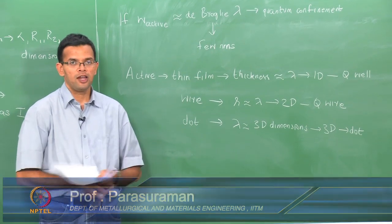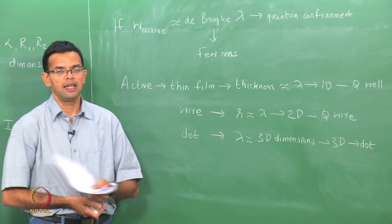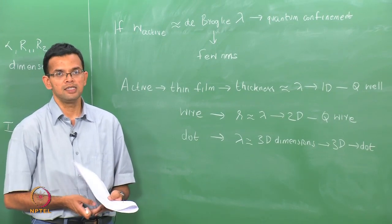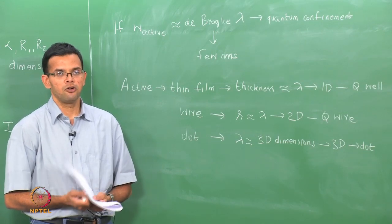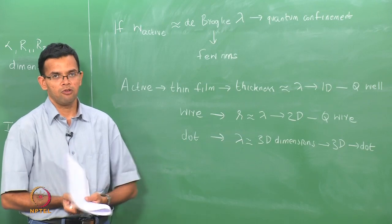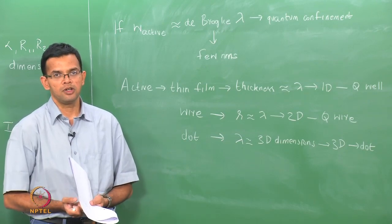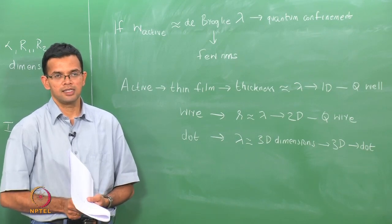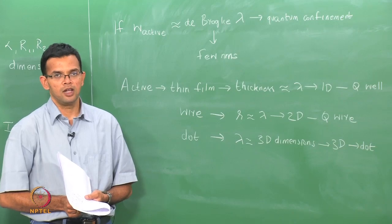We have looked at two optoelectronic devices where an input electric current gives you an output light — both LEDs and lasers. In the next class we are going to look at the reverse problem where we shine light onto a material and look at the output electrical current. We will look at photodetectors in the next class, and after that we will look at solar cells.